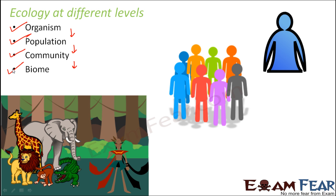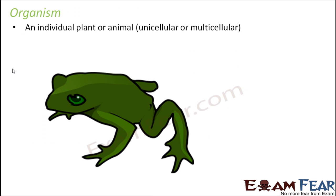Let us try to understand each of these terms. We will start with organism. An organism is an individual plant or animal. It can be unicellular or multicellular. One single bacteria, which is a unicellular organism, is an organism. A frog, which is a multicellular organism, is also an individual and therefore an organism. A human being is one individual, so it is an organism.